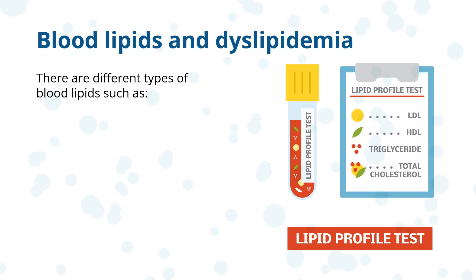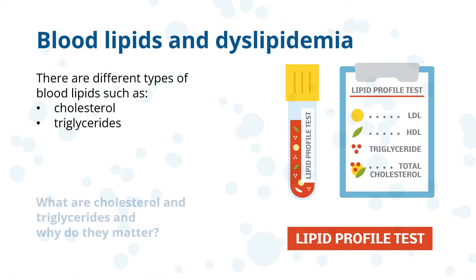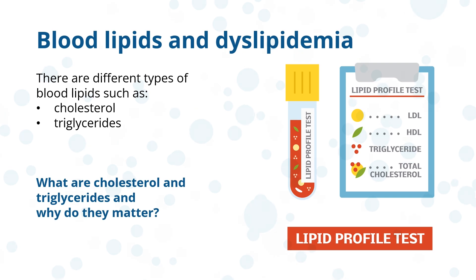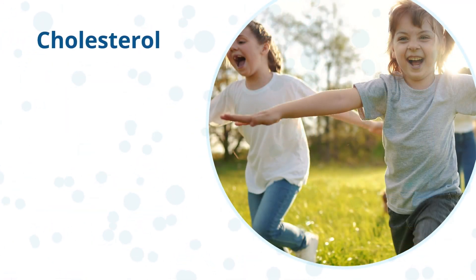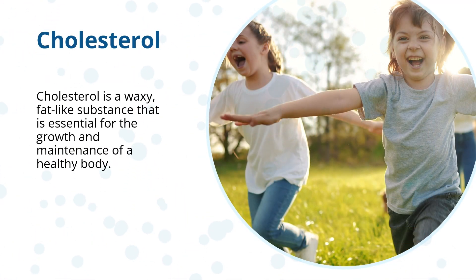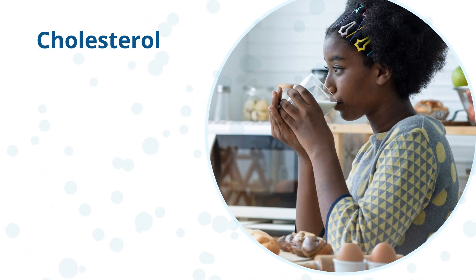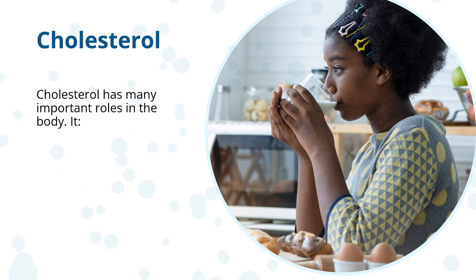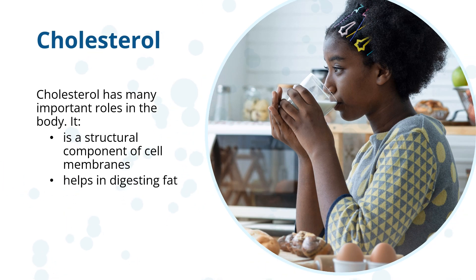There are different types of blood lipids, such as cholesterol and triglycerides. Cholesterol is a waxy, fat-like substance that is essential for the growth and maintenance of a healthy body. Cholesterol has many important roles in the body: it is a structural component of cell membranes, it helps in digesting fat, and it helps make vitamin D.